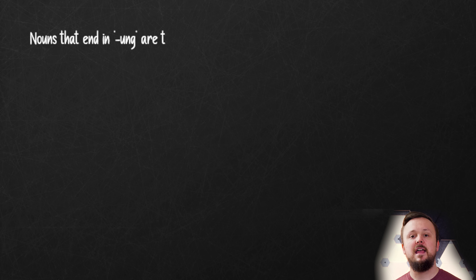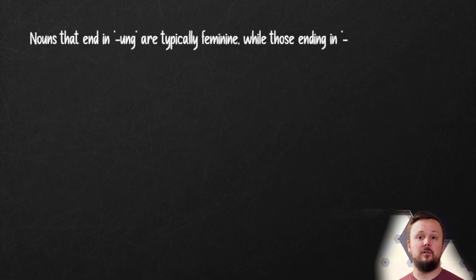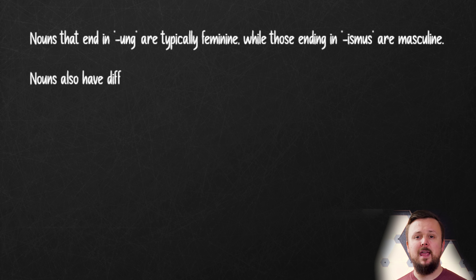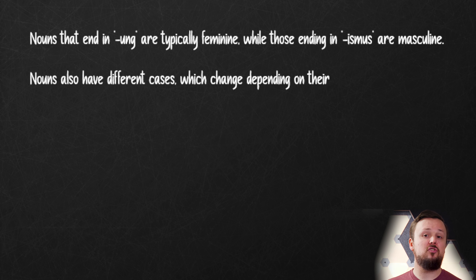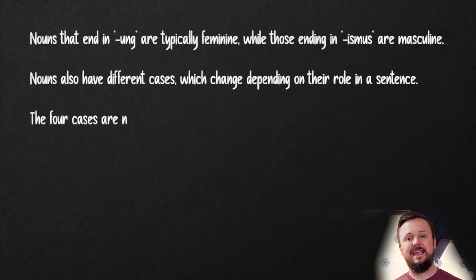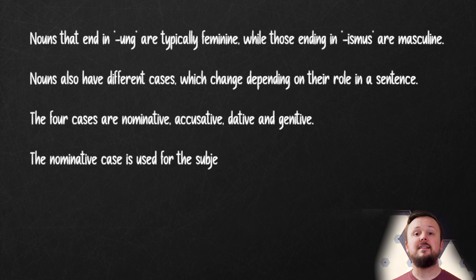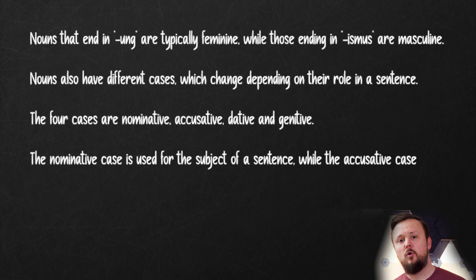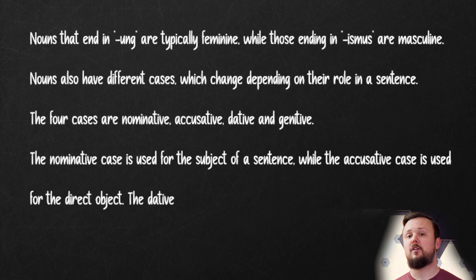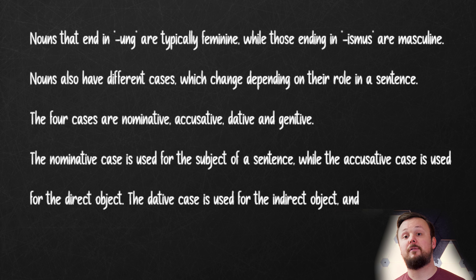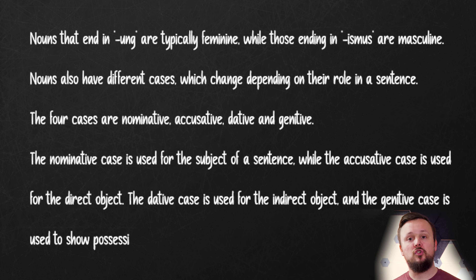There are no hard and fast rules for this, so it's important to learn the gender of a noun along with the noun itself. One helpful trick for remembering gender is to associate certain endings with specific genders. For example, nouns that end in -ung are typically feminine, while those ending in -ismus are masculine. Nouns also have different cases which change depending on their role in a sentence. The four cases are nominative, accusative, dative, and genitive. The nominative case is used for the subject of a sentence, while the accusative case is used for the direct object. The dative case is used for the indirect object and the genitive case is used to show possession.